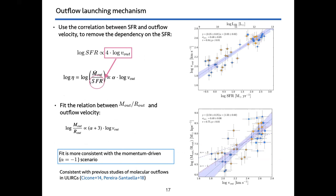Since we found a very good correlation between outflow velocity and star formation rate, we tried to use this relation to substitute the star formation rate in the equation and investigate the launching mechanism using only the outflow mass, radius of the outflow, and outflow velocity. We can see this in the bottom right plot where we have the outflow mass divided by radius versus the outflow velocity. In this case our best fit is more in agreement with the momentum-driven scenario than with the energy-driven scenario. Of course there is a large scatter in this plot, so it is not very conclusive.